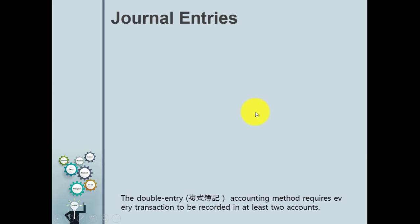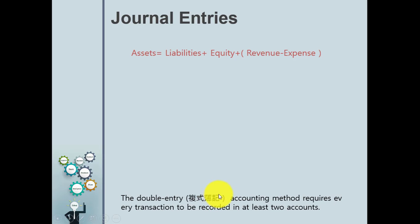So, how about journal entries? A journal entry uses double-entry bookkeeping, which involves both a debit and a credit. In Chinese, this is called jia fang and dai fang.